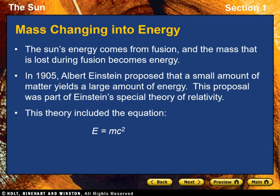The sun's energy comes from fusion, and the mass lost during fusion becomes energy. In 1905, the physicist Albert Einstein — then an unknown patent office worker — proposed that a small amount of matter yields a large amount of energy. At the time, the existence of nuclear fusion was unknown; in fact, scientists had not yet discovered the nucleus of the atom. Einstein's proposal was part of his special theory of relativity.